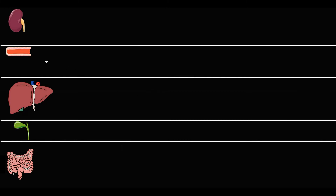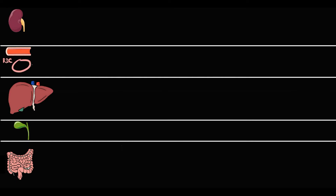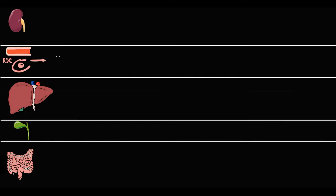We have five compartments: kidneys, blood, liver, bile, and intestine. In the blood we have red blood cells. Like any cells in the human body, red blood cells also undergo self-renewal. When red blood cells become old, they go to the spleen where splenic macrophages destroy them, releasing their inner content.